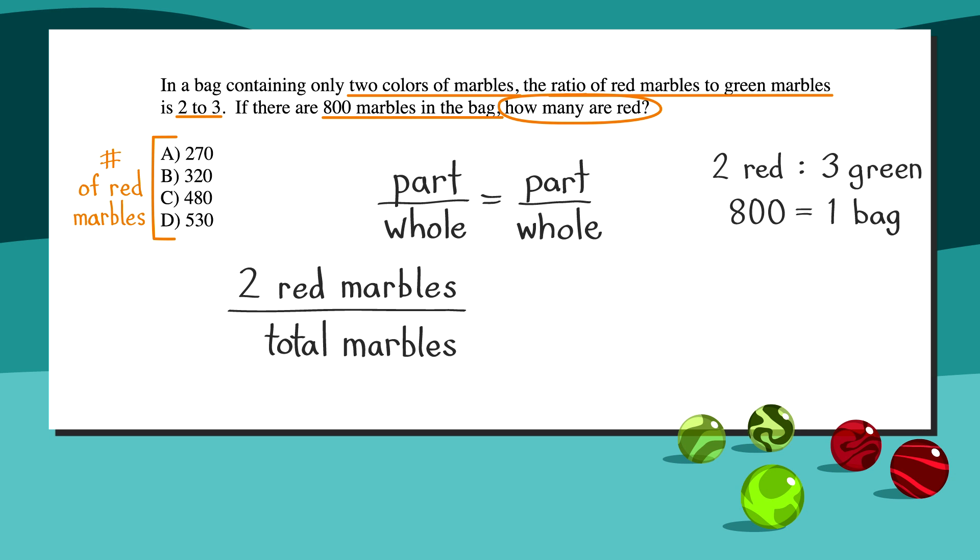We have 2 red marbles over total marbles equals x red marbles over 800 total marbles. Remember, the same units of measure are across from each other in our equation. To figure out how many total marbles we have in the fraction on the left, let's draw a picture.